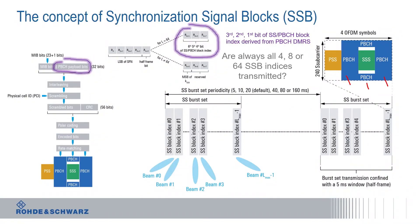The question is now: are all of these indices, independent of the frequency range, always transmitted? The answer is no. This is highly dependent on the design of the particular antenna array being used — so it depends on the infrastructure supplier how many SSB indices are actually transmitted in a real network deployment. We will use an example to illustrate that, and also use it in our demonstration to measure coverage at the FR2 frequency of 28 GHz.